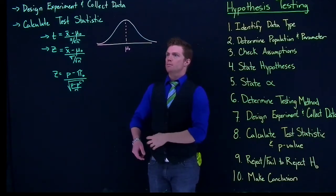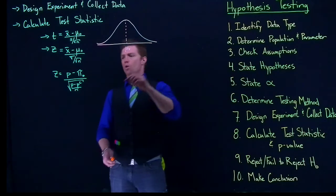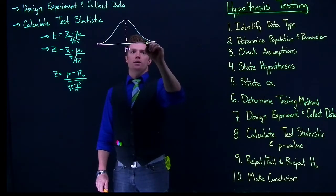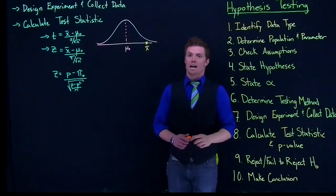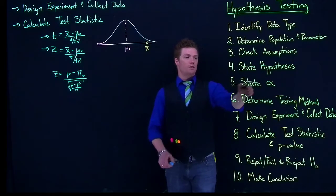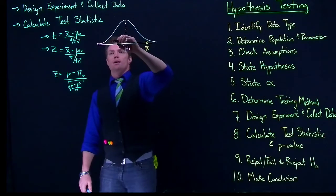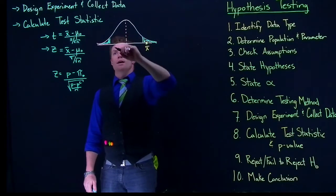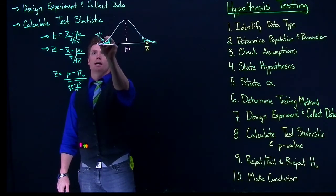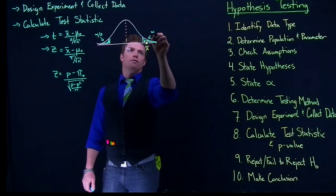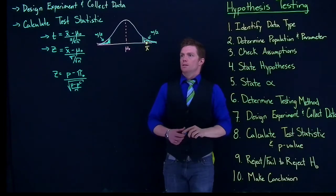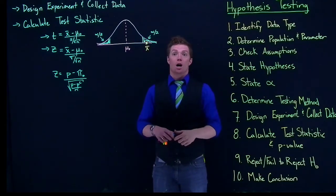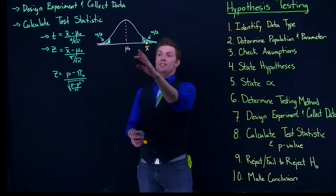We're going to get some x-bar — some value that's right here — that is what my sample got. Let's include an alpha. Let's say I did a two-tail test, and I had alpha divided by 2 on one side, and alpha divided by 2 on the other side. We're trying to see: is our sample so far away from the hypothesized value that we're willing to reject the null hypothesis — are we willing to claim that this is not true?